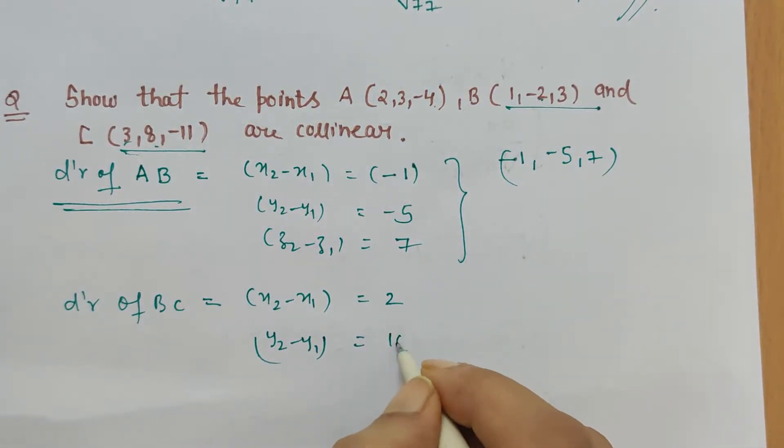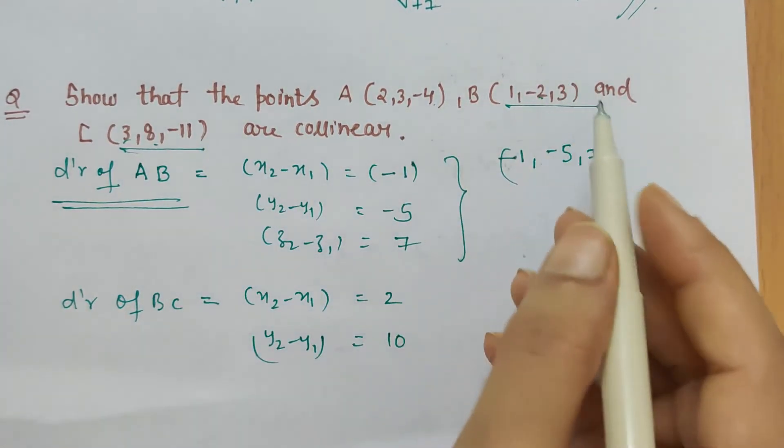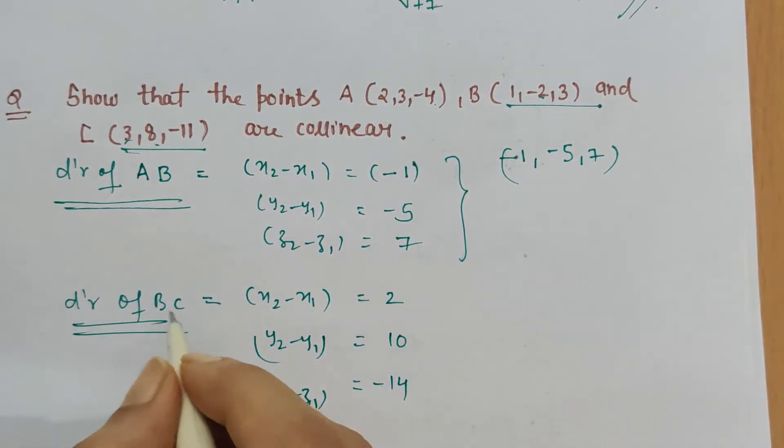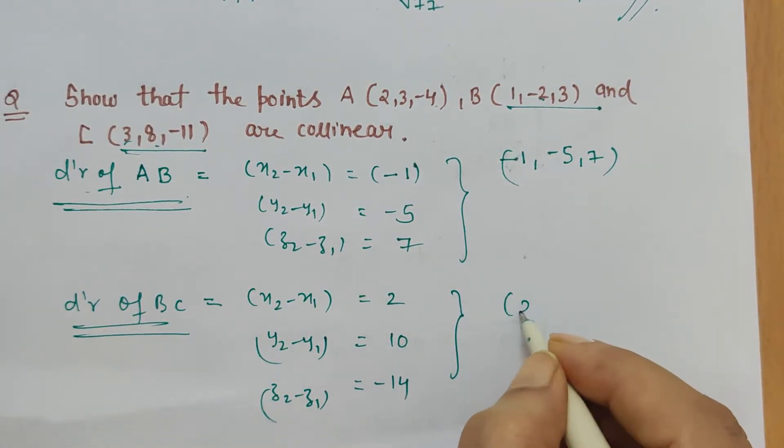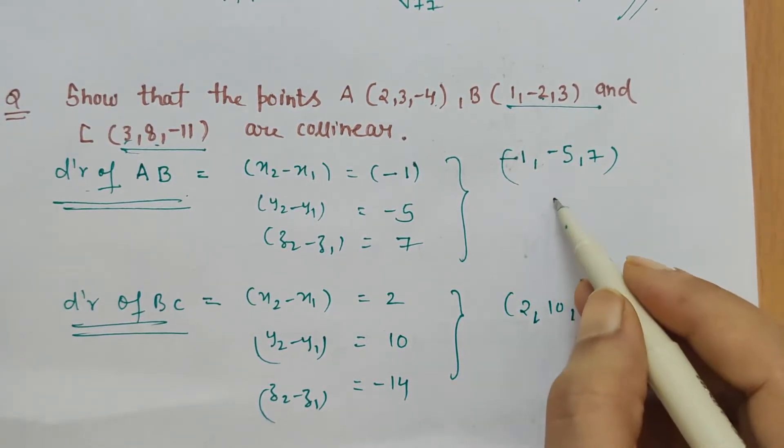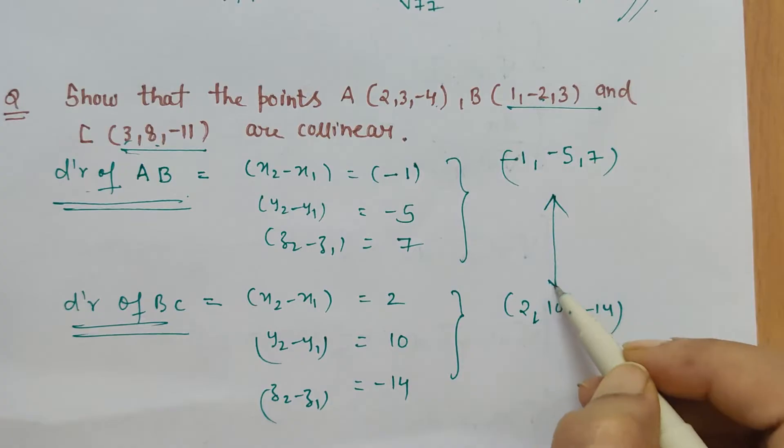...minus 2, which is 10. Then minus 11 minus 3 is minus 14. So what do we see in the direction ratio of AB and direction ratio of BC? The direction ratio is (2, 10, -14), which shows that they are proportional.